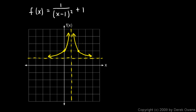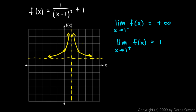We can still use limit notation to describe the behavior of the function around x equals 1. We can say the limit as x approaches 1 from the left of f of x is positive infinity, and the limit as x approaches 1 from the right of f of x is positive infinity. But we recognize that the limit does not exist. For a limit to exist, the left and right limits must both be equal and must be finite.